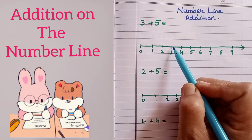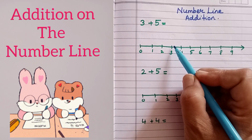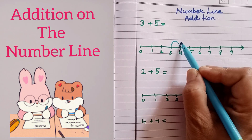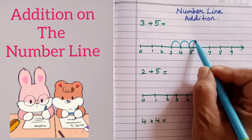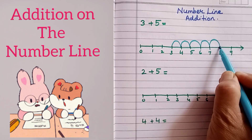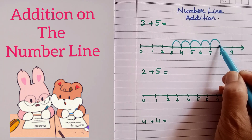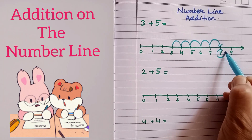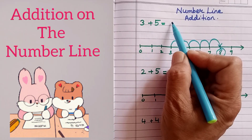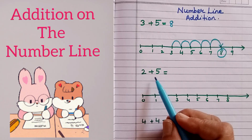We will start with three and we have to add five, so we will go up five numbers: one, two, three, four, five. We have gone up five numbers and the answer is eight. So here we write three plus five is equal to eight.